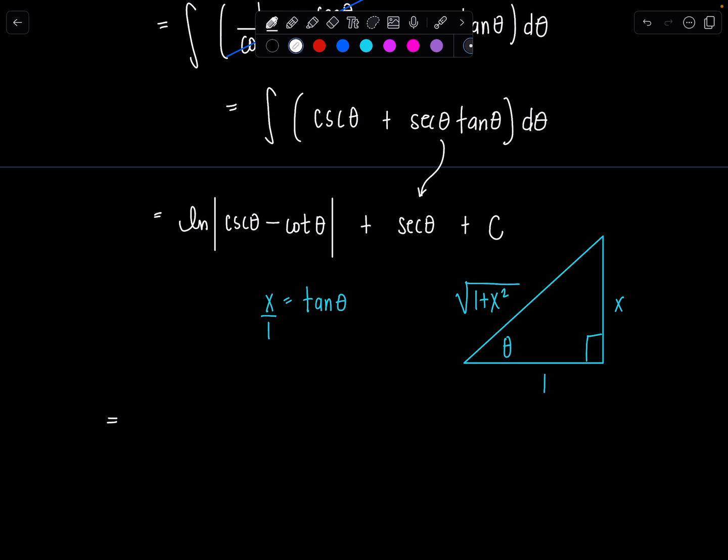So now we can go back to x. I have ln, absolute value. Cosecant theta is reciprocal of sine theta. So instead of opposite over hypotenuse, it's going to be hypotenuse over opposite.